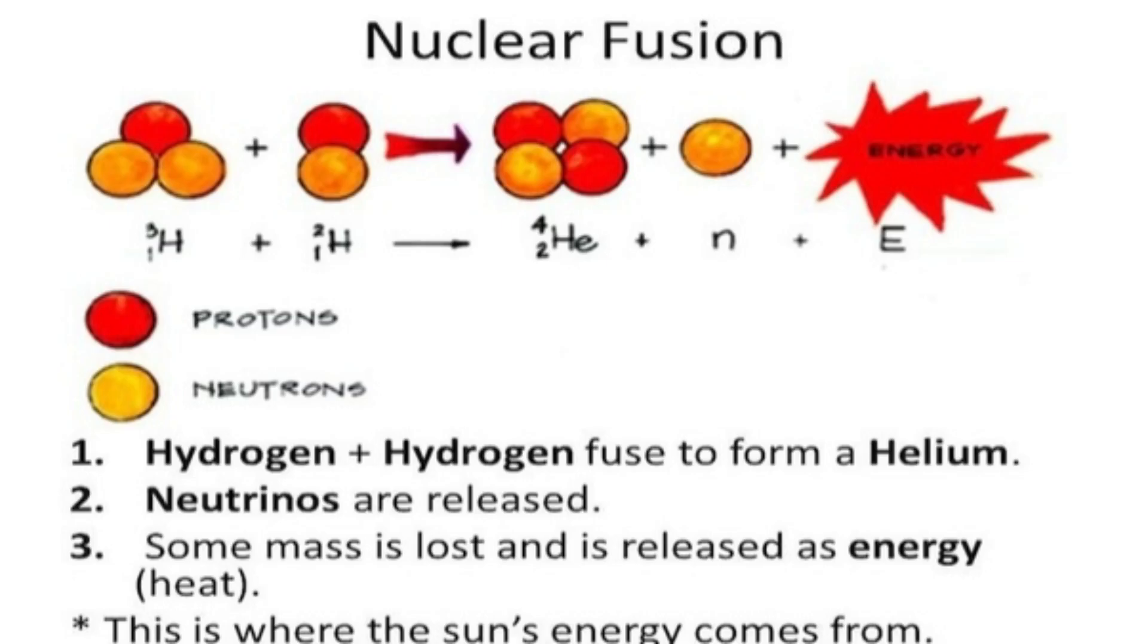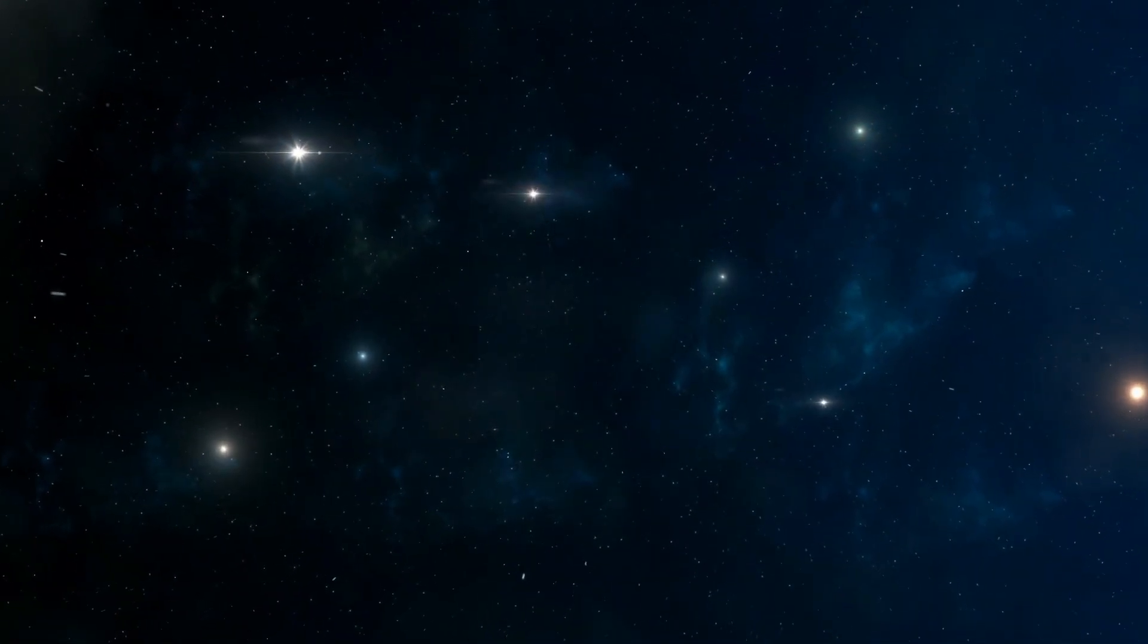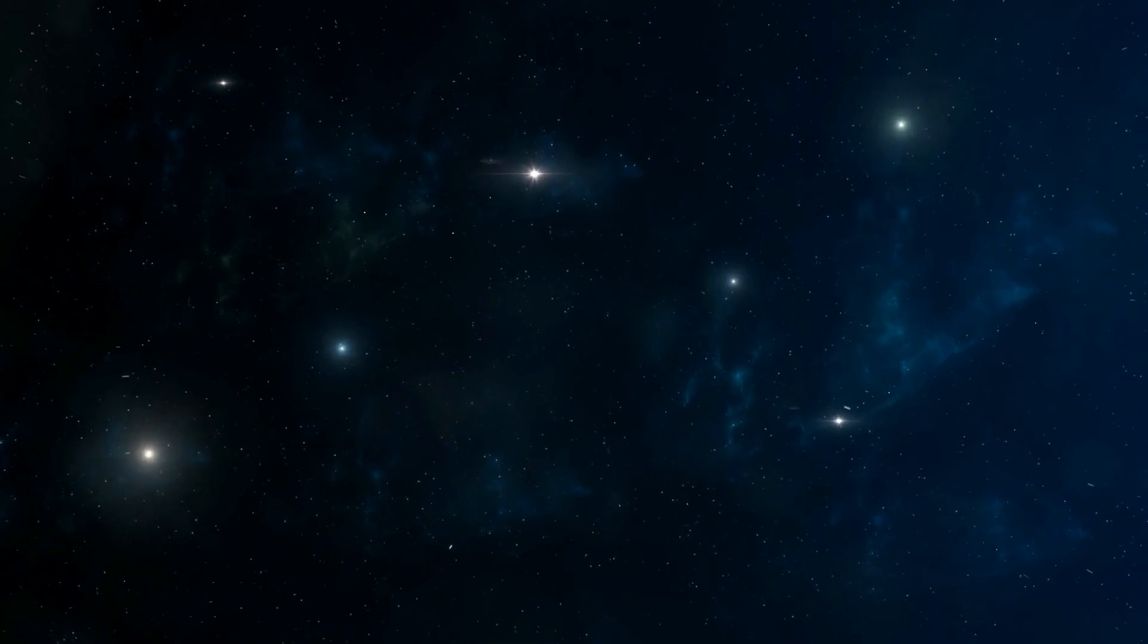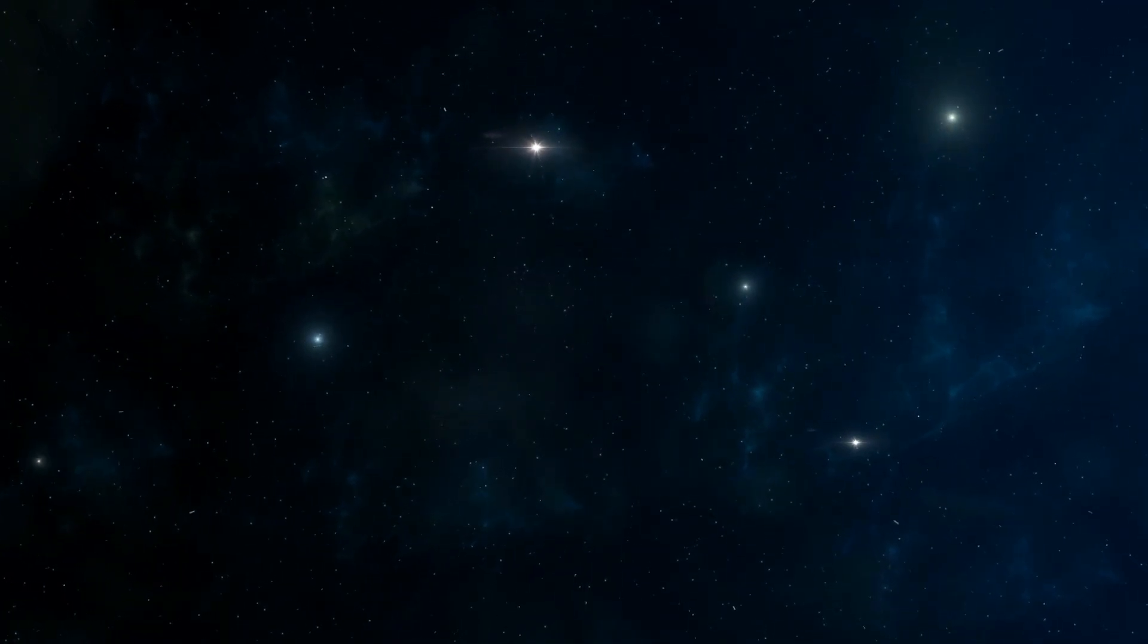As the sun depletes its hydrogen reserves in approximately 5 billion years, it will evolve into a red giant star, where pressure stems from the fusion of helium into even heavier elements.